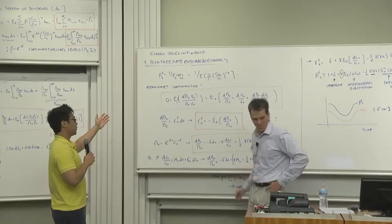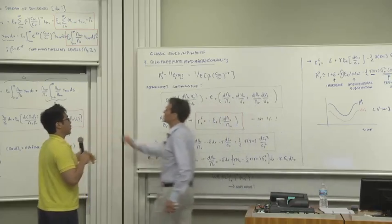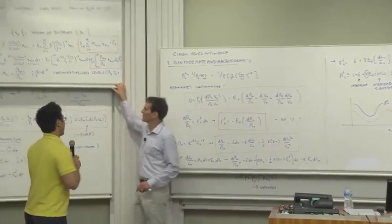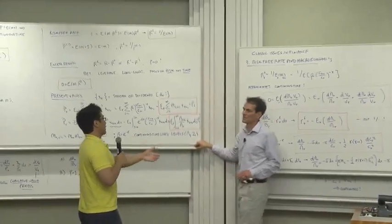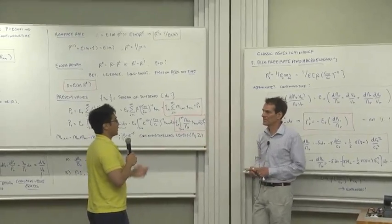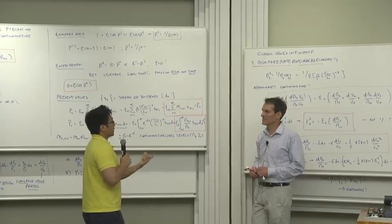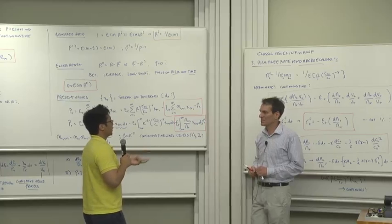What we're doing is we're breaking it up pretty much using Taylor's rule and Ito's lemma to get back at another, you know, like the continuous time analog. So we have two approximations going on.